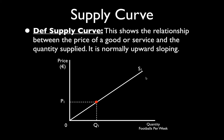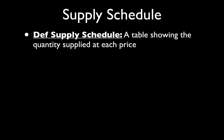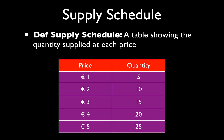The supply curve shows the relationship between the price of a good or service and the quantity supplied, and it is normally upward sloping. The supply schedule is a table showing quantity supplied at each price. This is the supply schedule we've been using in the previous videos, and it does obey the law of supply.